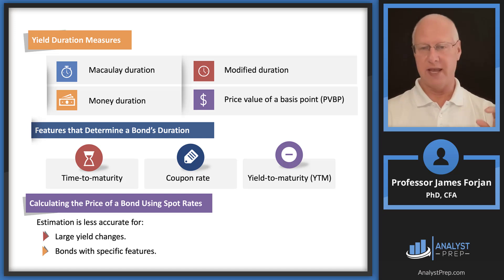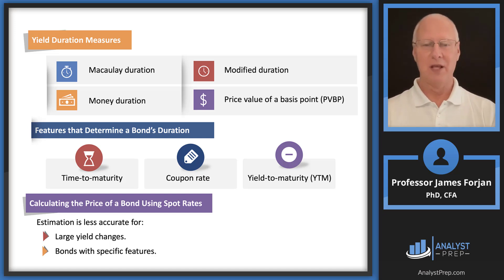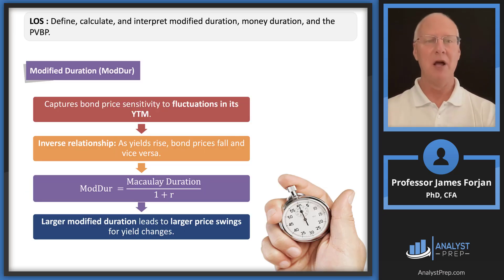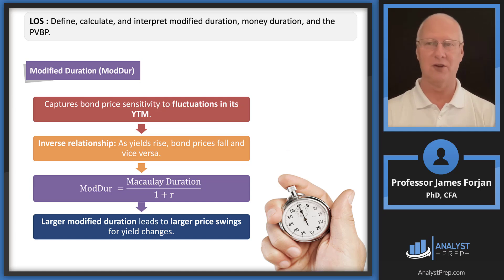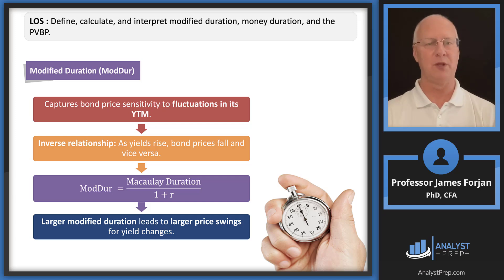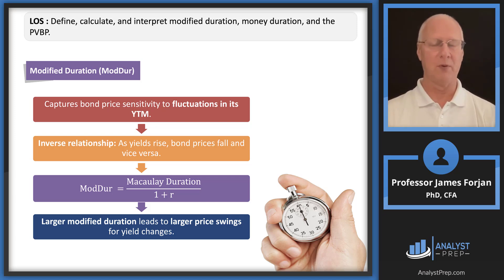Let me repeat this — it's worth repeating. The kindergarten model does an okay job. The spot curve model does a better-than-okay job. But the modified duration model is going to do a much better-than-okay job of computing that future bond price.